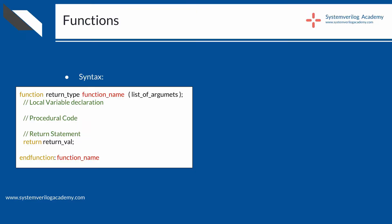Here is the general structure of a function in SystemVerilog. The first statement starts with the keyword function, followed by the return type, function name, list of arguments known as formal arguments in brackets, and a semicolon. The last statement is the keyword endfunction, colon, and function name. If the function is not returning any value to the calling point, the return type should be given as void.